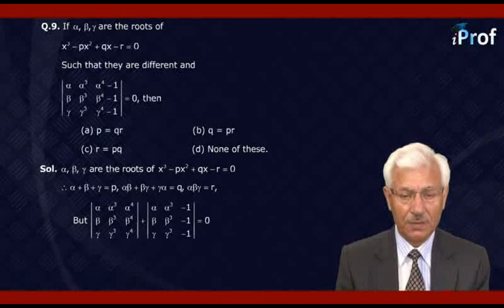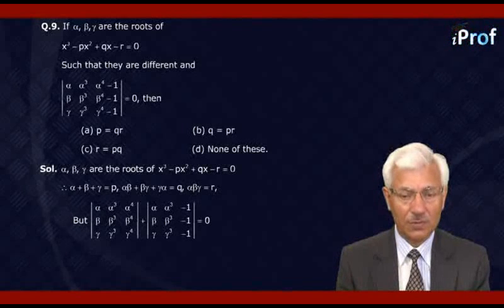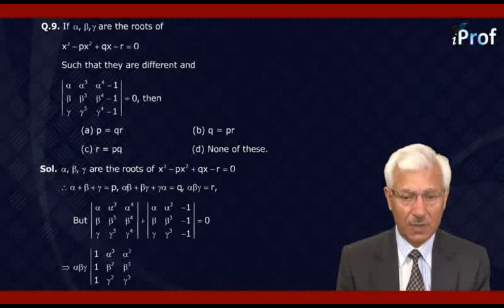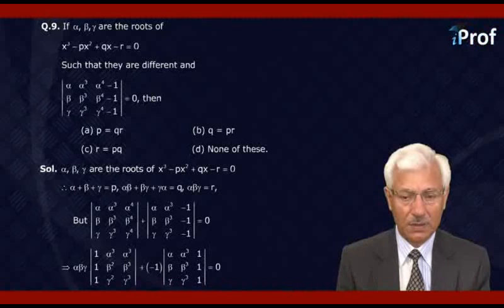From the first determinant, we can pull out α, β, γ common from the first, second, and third rows respectively. We get αβγ times the determinant with rows (1, α², α³), (1, β², β³), (1, γ², γ³), minus pulling out the negative sign common, we get -1 times the determinant with columns (α, β, γ), (α³, β³, γ³), and (1, 1, 1).